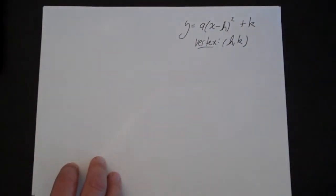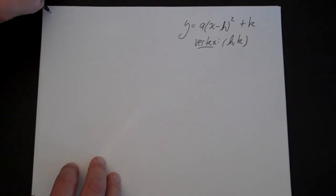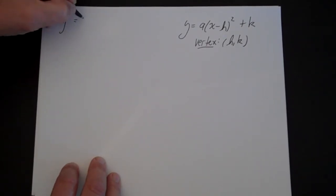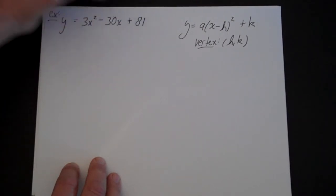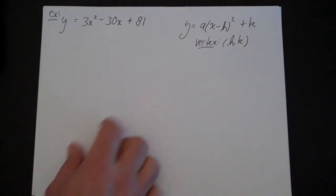So this is a real useful form. Let's look at a problem where we have y equals 3x squared minus 30x plus 81. And we want to rewrite it in HK form.